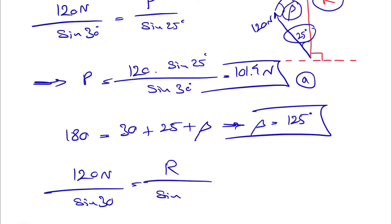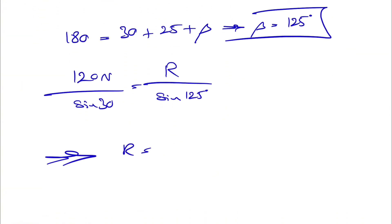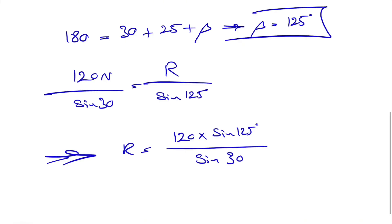And this is great because we just have to find 120 times sine of 125 degrees divided by sine of 30. And from here we can find the second unknown, 196.6 Newton using a calculator.